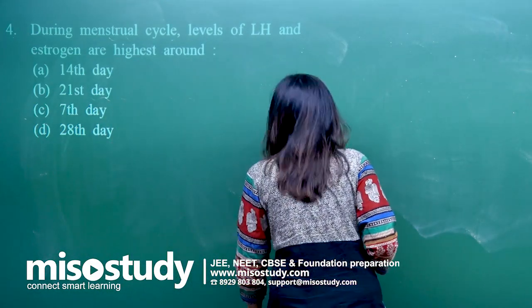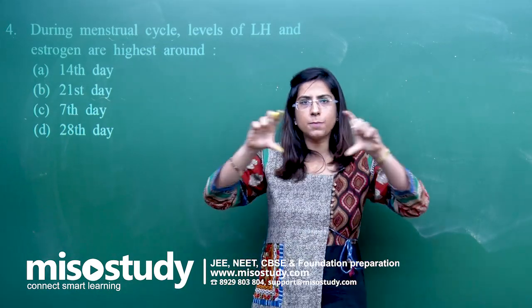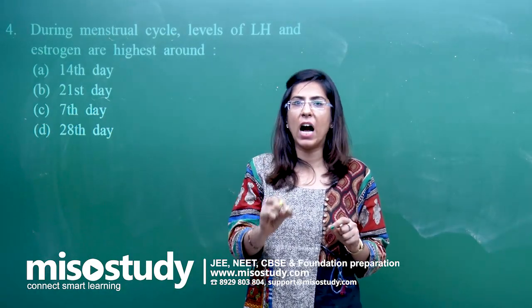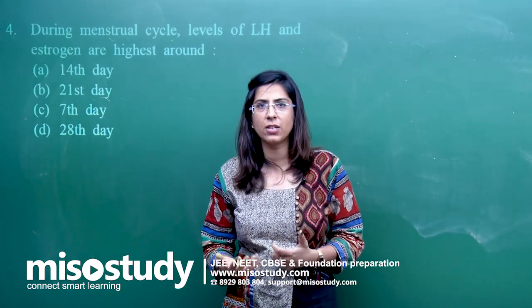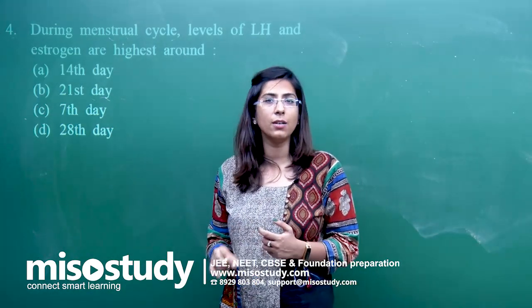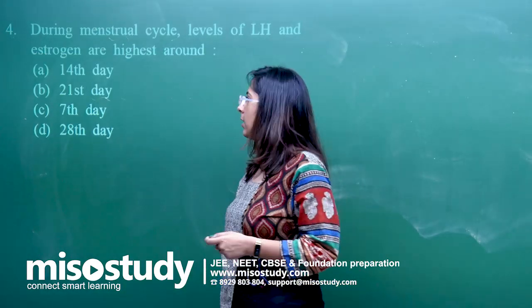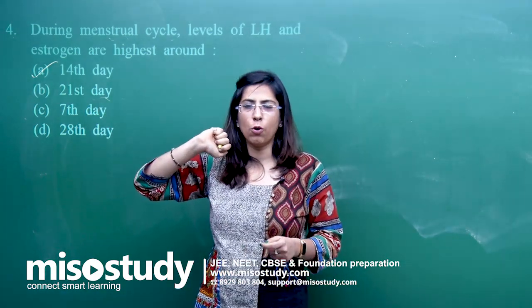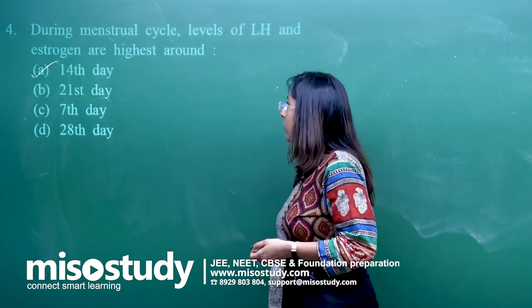Question 4: during the menstrual cycle, the level of LH and estrogen are highest around when? The cycle is 28 days and during the fourteenth day we experience a higher level of LH and FSH in blood so that ovulation can happen. Once ovulation has happened, there is a negative feedback to the anterior pituitary for less secretion of FSH and LH, since further maturation is not needed. The correct option for question 4 is A.